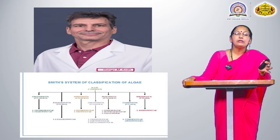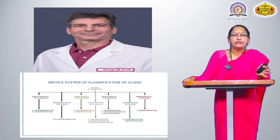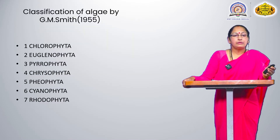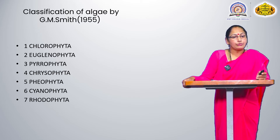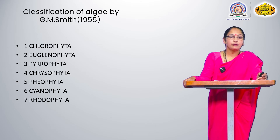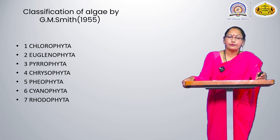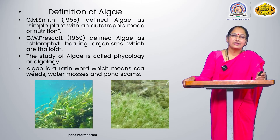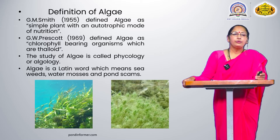These 11 classes were derived by Fritsch. In today's lecture, we focus on the division algae as derived into seven classes by G.M. Smith in 1955. These seven classes are: Chlorophyta, Euglenophyta, Pyrrophyta, Chrysophyta, Phaeophyta, Cyanophyta, and Rhodophyta.